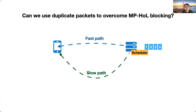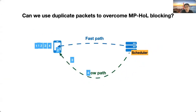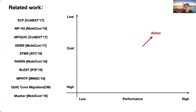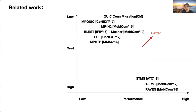To overcome multipath head-of-line blocking, one way is to send duplicate packets, but redundant packets mean that bandwidth or traffic cost is much higher — especially in video application where traffic is already very high, costing as much as 10 cents per gigabyte. Prior research schedulers generally fall into two categories: high performance but high traffic cost overhead, or low traffic cost but also low performance. What we really need is a solution that achieves both good performance and low cost at the same time.